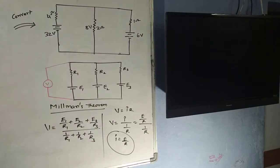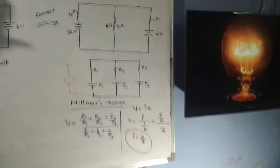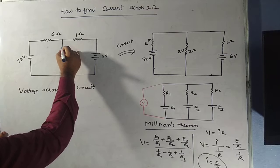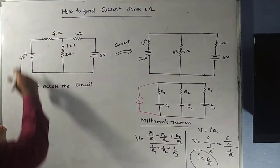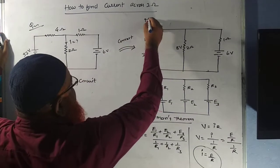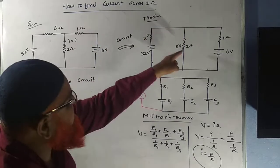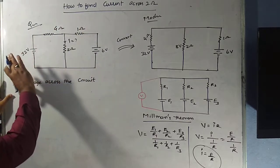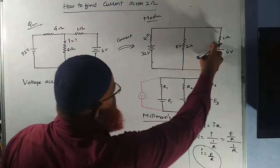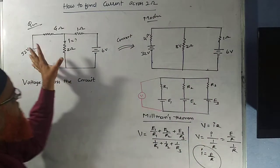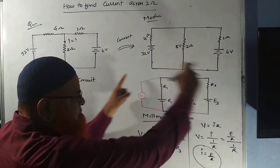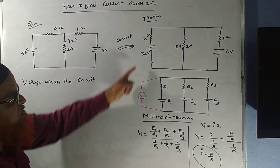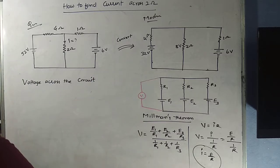Let us consider this circuit. How do you find the current across the two-ohm resistor? That is the question here. This is the modified circuit, so that you can apply Millman's theorem and solve this type of complex circuit. What you are going to do here: you shift the four-ohm resistor here and the one-ohm resistor here, so that these three branches are now in parallel. We are converting this circuit so that we can apply Millman's theorem to find the voltage across the circuit.